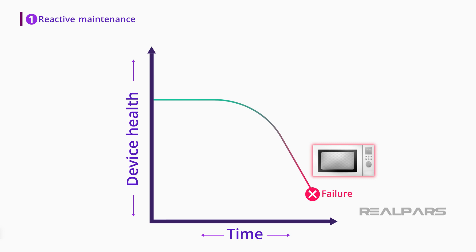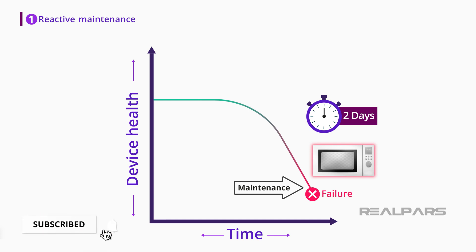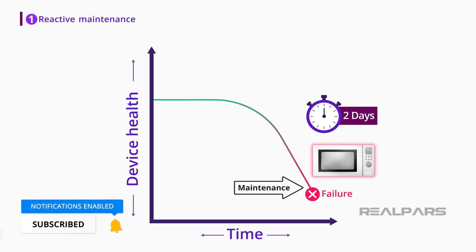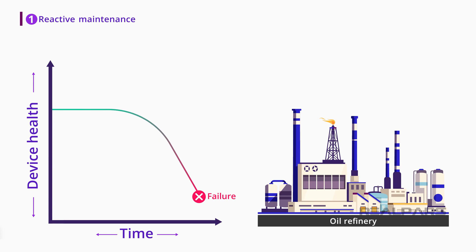In this case, you repair the microwave or buy a new one, but it may take a couple of days to do either. That means with this wait-and-react way of maintenance, you may not be able to use your microwave for a couple of days, which is not a big deal. However, if the same thing happens in a big industrial enterprise like an oil refinery, there might be huge consequences.